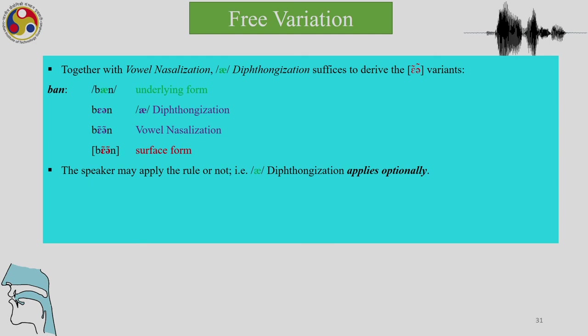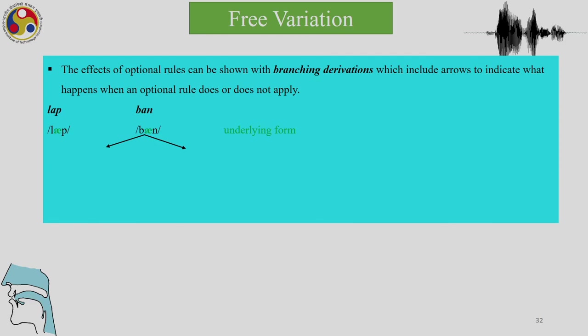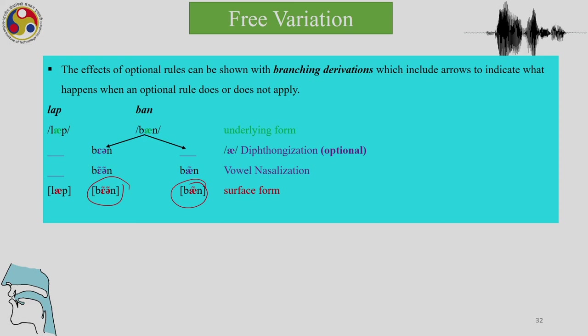Because of free variation, the context does not always determine exactly how a word will be pronounced, and hence diphthongalization applies optionally. The effects of optional rules can be shown with branching derivations — including arrows to indicate what happens when an optional rule does or does not apply. If diphthongization applies and then nasalization applies, we get one surface form; if diphthongization does not apply, we get only vowel nasalization.